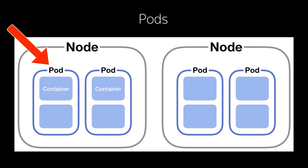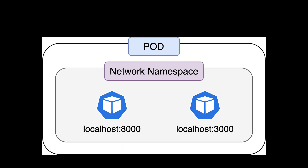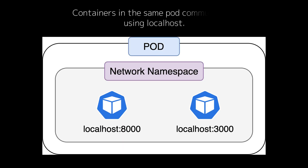A pod is essentially a wrapper around one or more containers that share the same network and storage resources. Each pod in Kubernetes represents a single instance of a running application. Containers within the same pod can communicate with each other easily because they share the same local network.